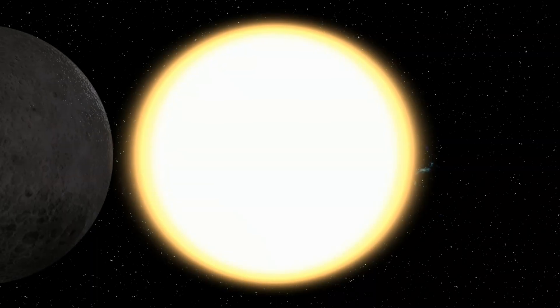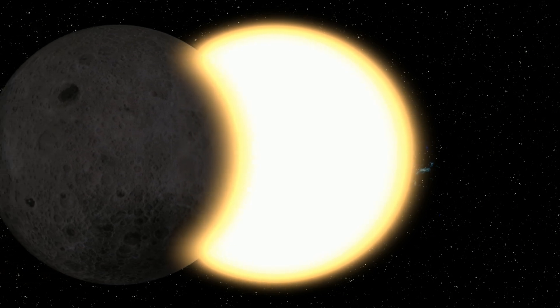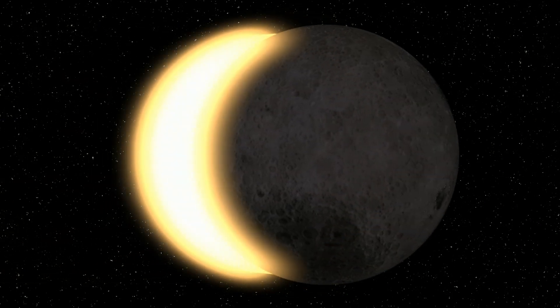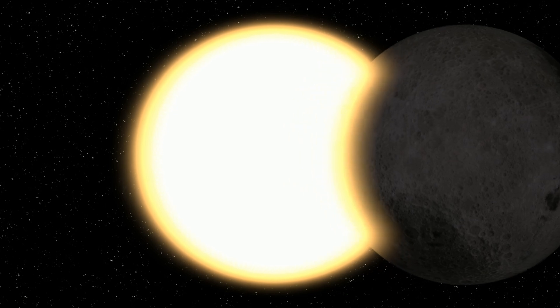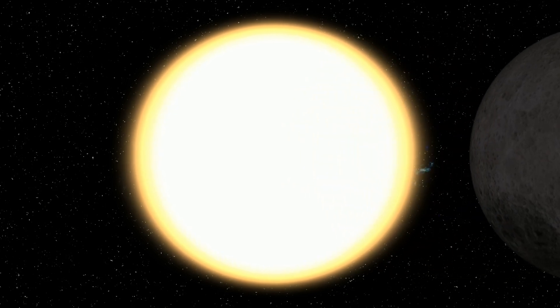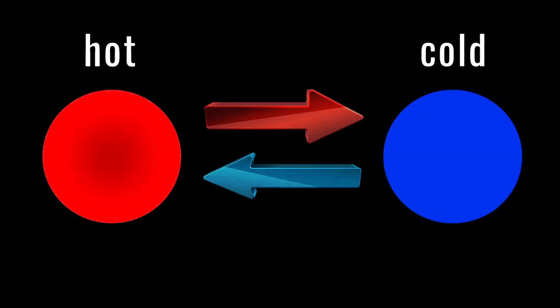So, where does the confusion come in? Since all objects radiate energy, it might appear that a colder object, like the Moon, can transfer heat to a hotter one, like the Sun, reversing the natural direction of heat flow.